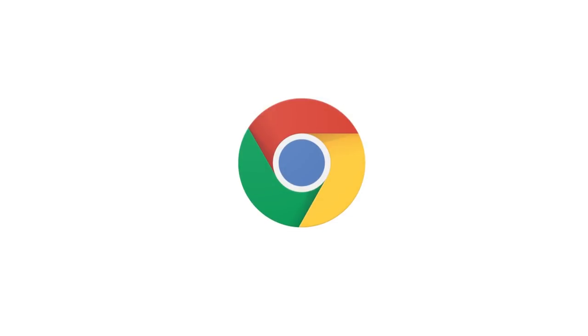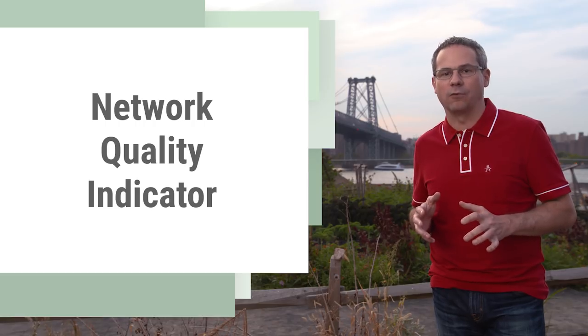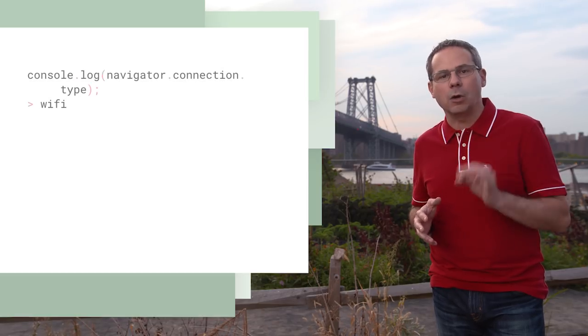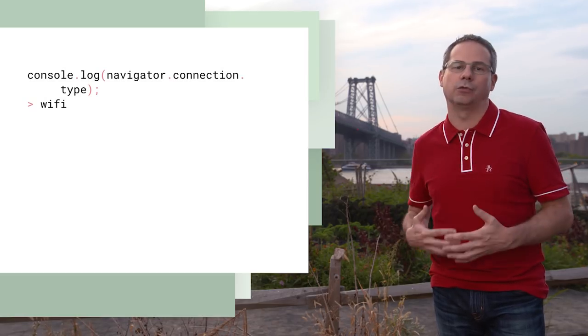Let's dive in and see what's new for developers in Chrome 62. The Network Information API has been available in Chrome for a while, but it only provides theoretical network speeds given the user's connection. Imagine you're on Wi-Fi, but connected to a cellular hotspot that only has 2G speeds — the API would report Wi-Fi.